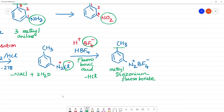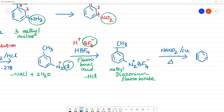The last step is what we can do with NaNO2 over Cu at temperature Tt. This is N2BF4. N2 gas will be removed as a byproduct.